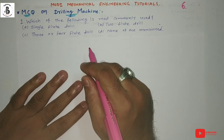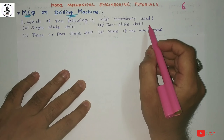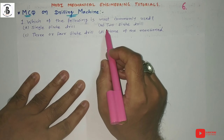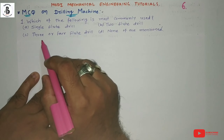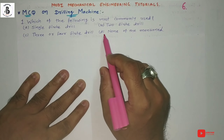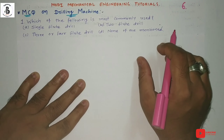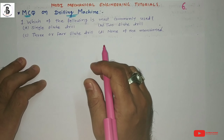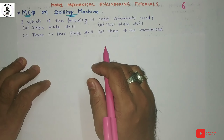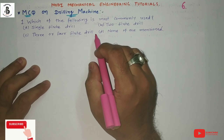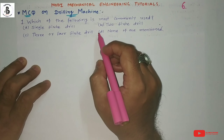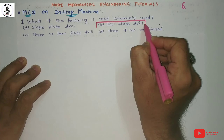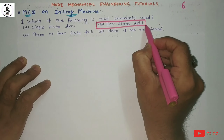Question one: Which of the following is most commonly used tool? Option A single flute drill. Option B two flute drill. Option C three or four flute drill. Option D none of the above. For general purpose use, the commonly used drill is the two flute drill. It provides good accuracy with quick metal removal. So option B, two flute drill, is the answer.